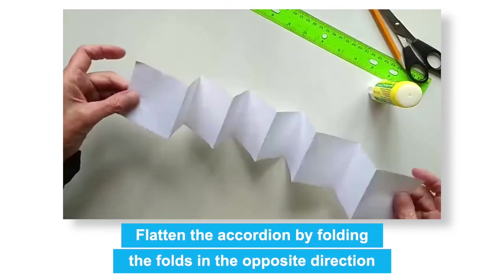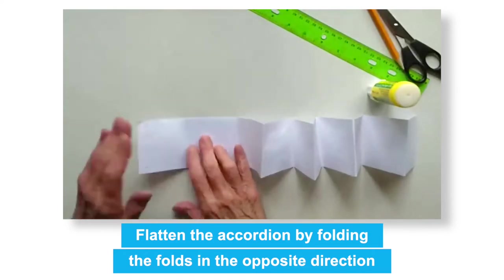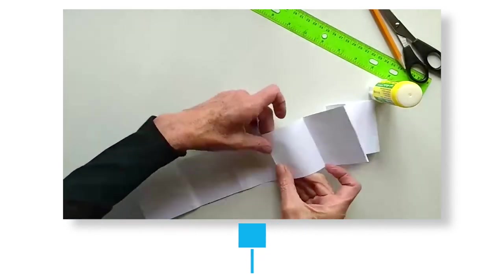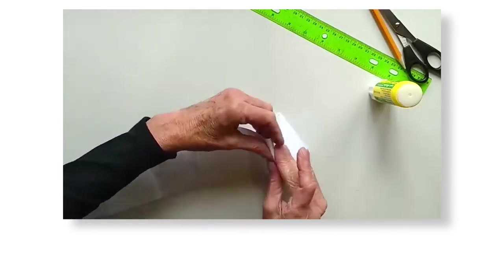The last step is to flatten the accordion by folding the folds in the opposite direction. This will make your pages flat for when we paint on them.